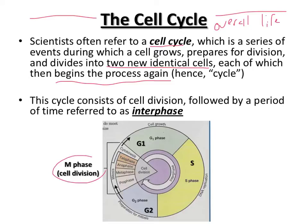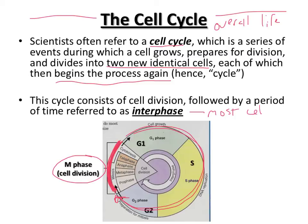The cycle consists of cell division, sometimes called M phase, and then the rest of the time is called interphase. The actual time during which a cell is dividing is just a fraction of the cell's life — less than a fourth of the time. The other more than three-fourths is interphase, so most cells in your body at any given moment are in interphase, not actually dividing.